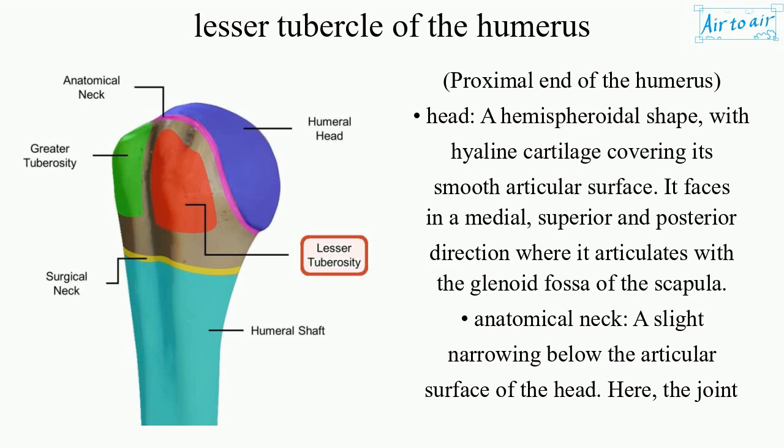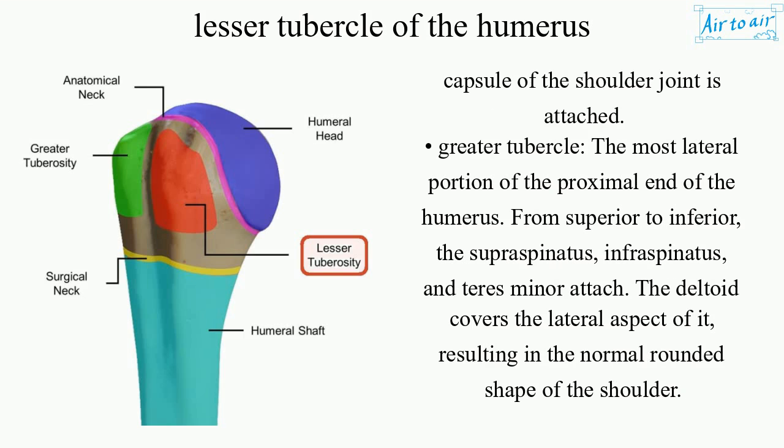Anatomical neck. A slight narrowing below the articular surface of the head. Here, the joint capsule of the shoulder joint is attached.